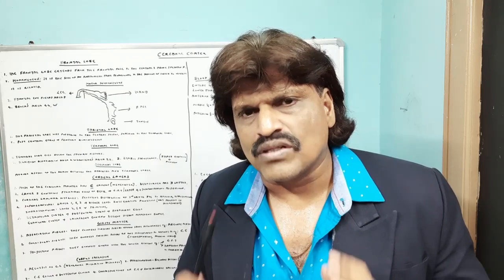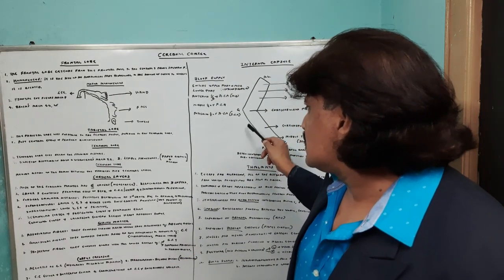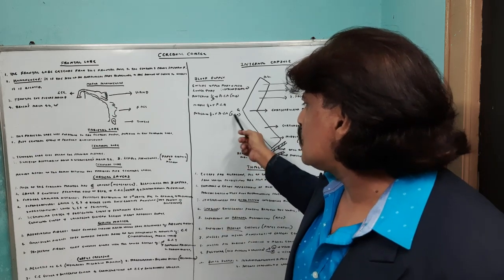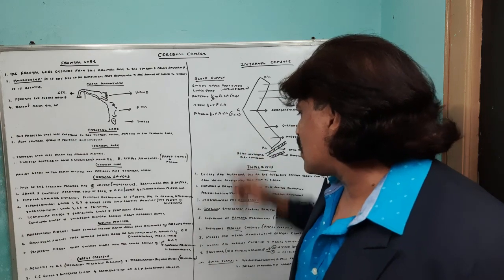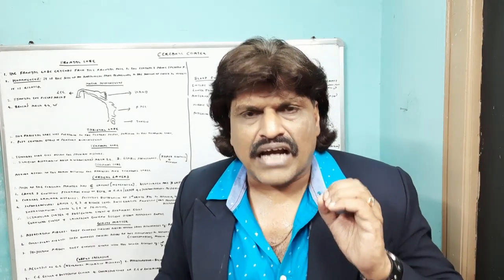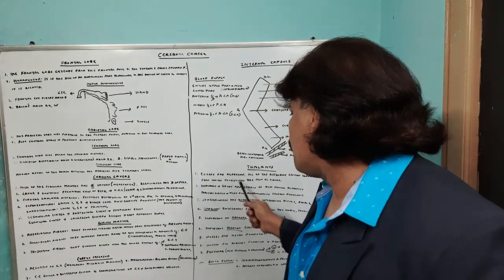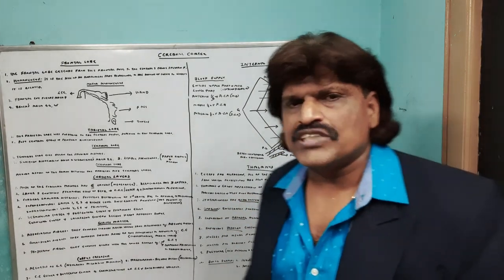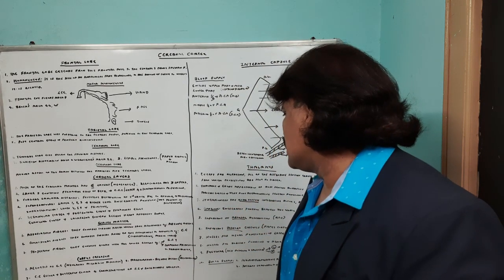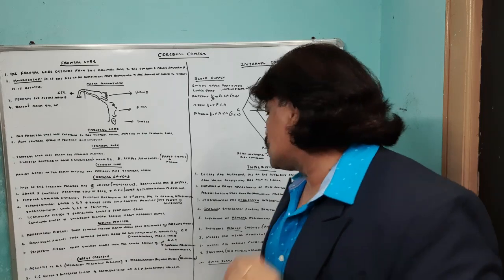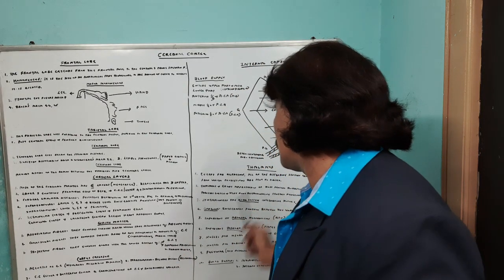Internal capsule is very important and we need to know its blood supply and structures thoroughly. Next we come to the thalamus, which is supplied predominantly by the posterior cerebral artery and the anterior choroidal artery. The thalamus is mainly an afferent sensory nucleus — almost all sensations must go through the thalamus to the cerebral cortex, except olfaction. The thalamus is responsible for the appreciation of all crude sensations.